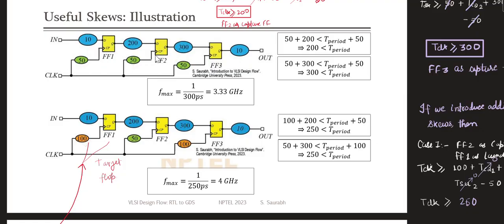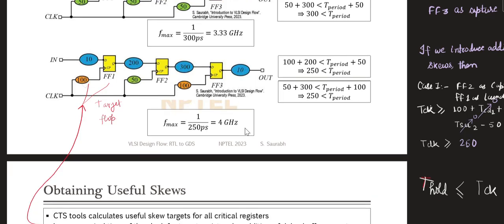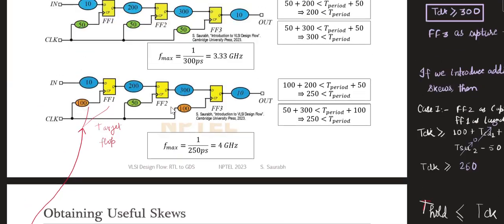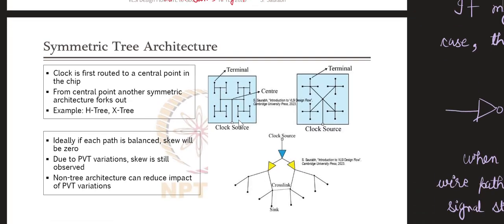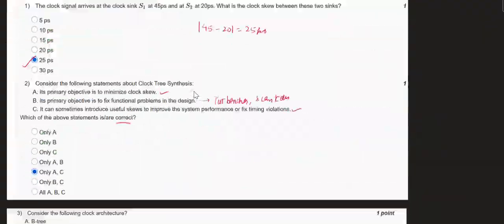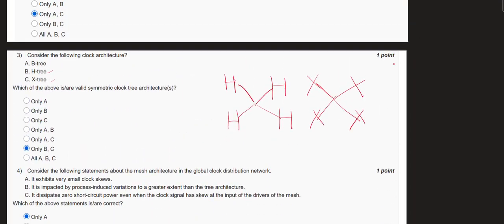From the course reference slides: when a useful skew of 100 picoseconds is introduced, the maximum operating frequency increases and simultaneous power drawn from the circuit is reduced. The H-tree architecture shows the clock source distributing the clock signal in H format, and the X-tree is the other format. Both B and C are correct options for the third question.